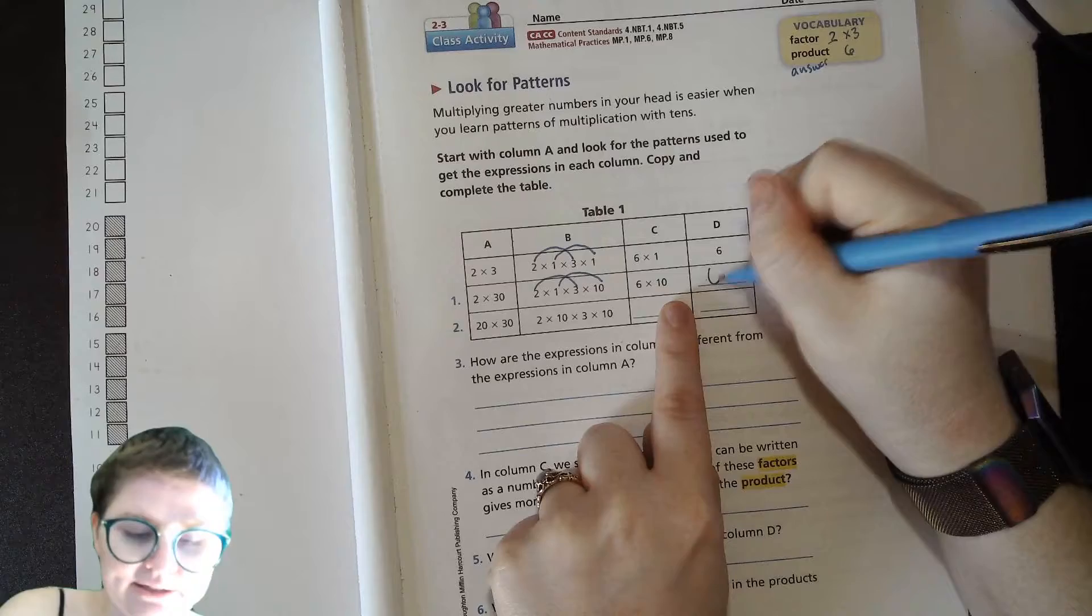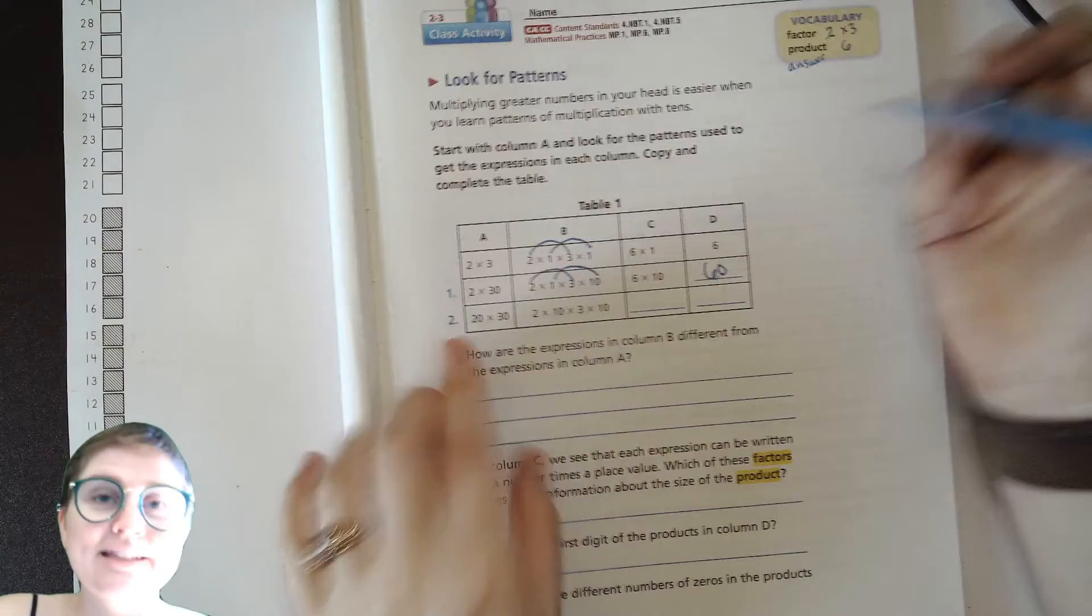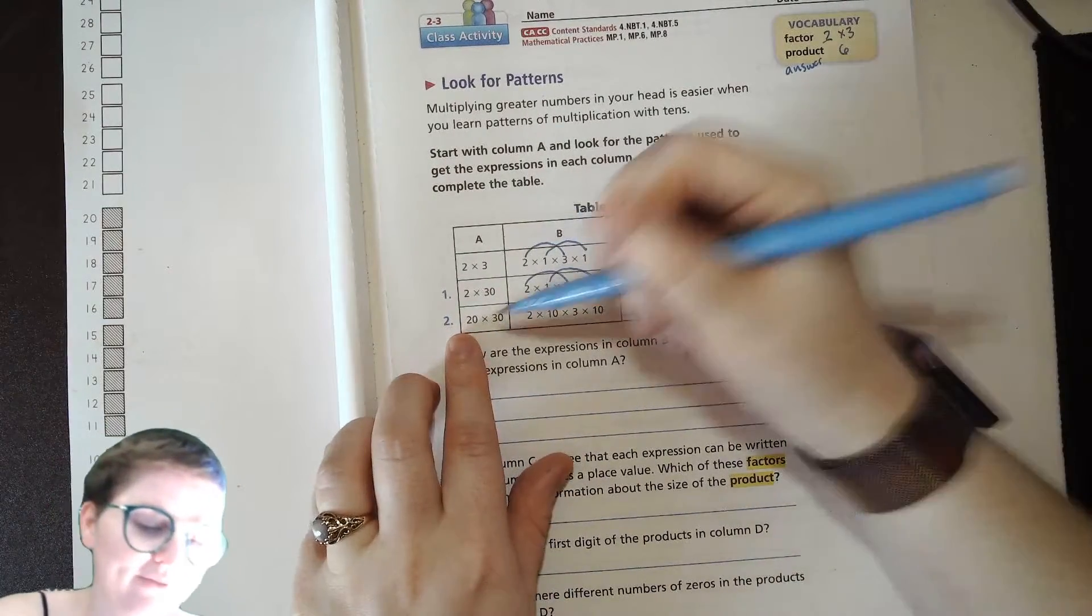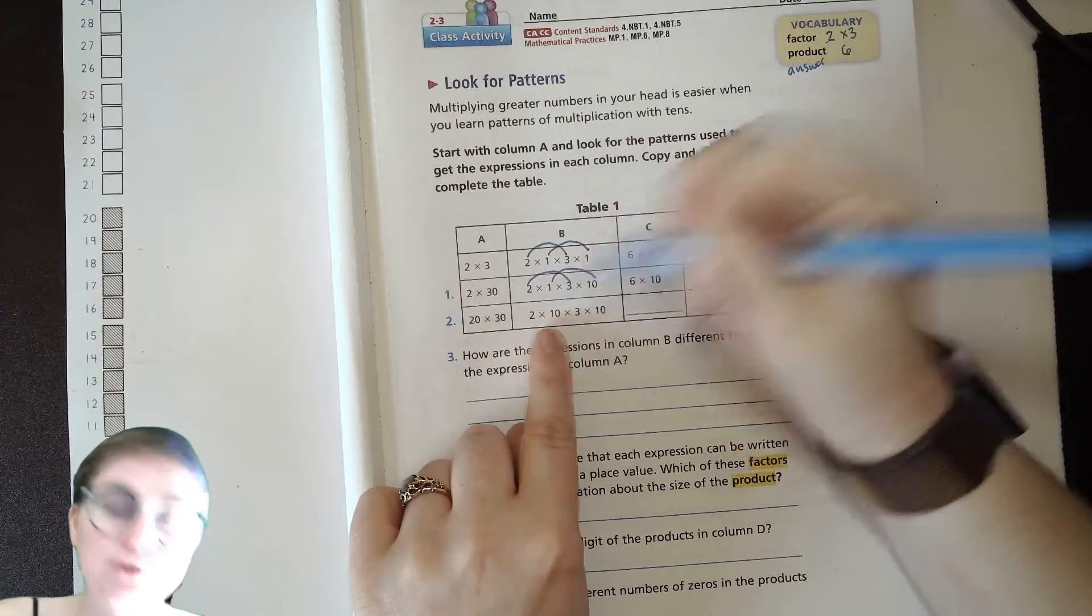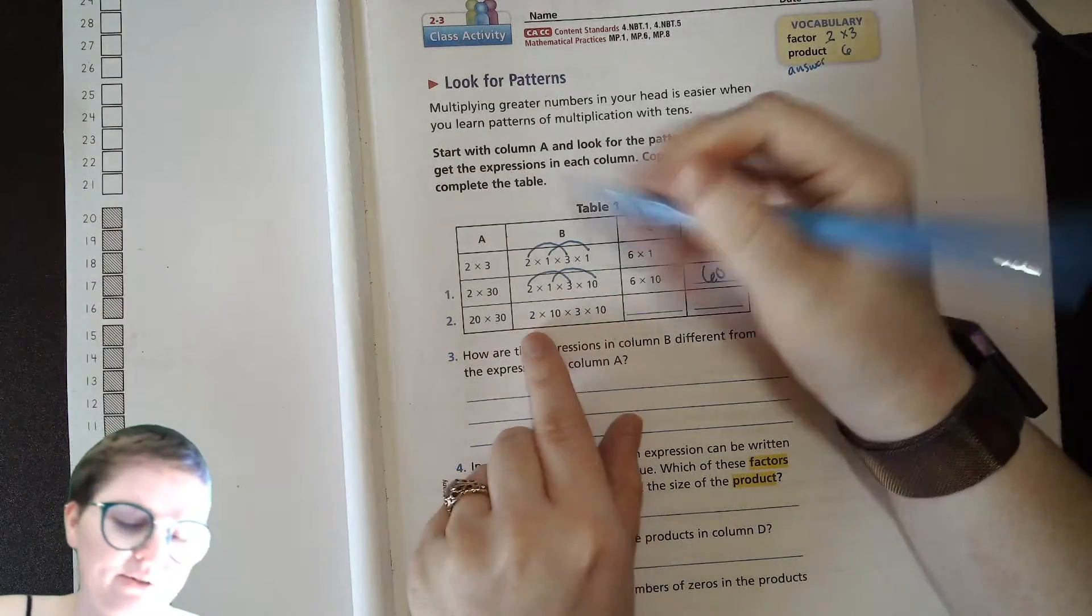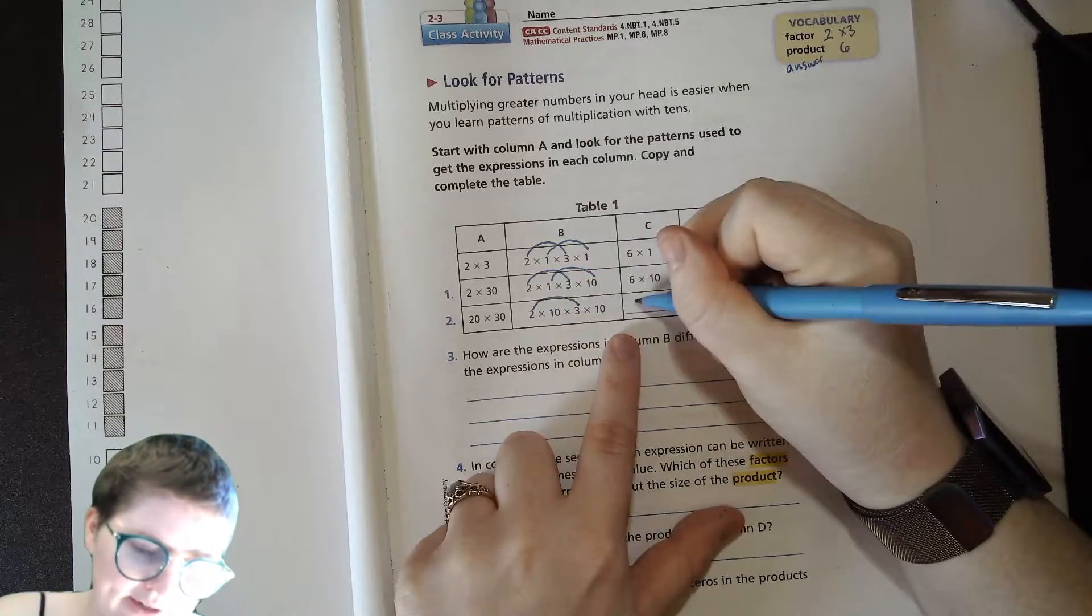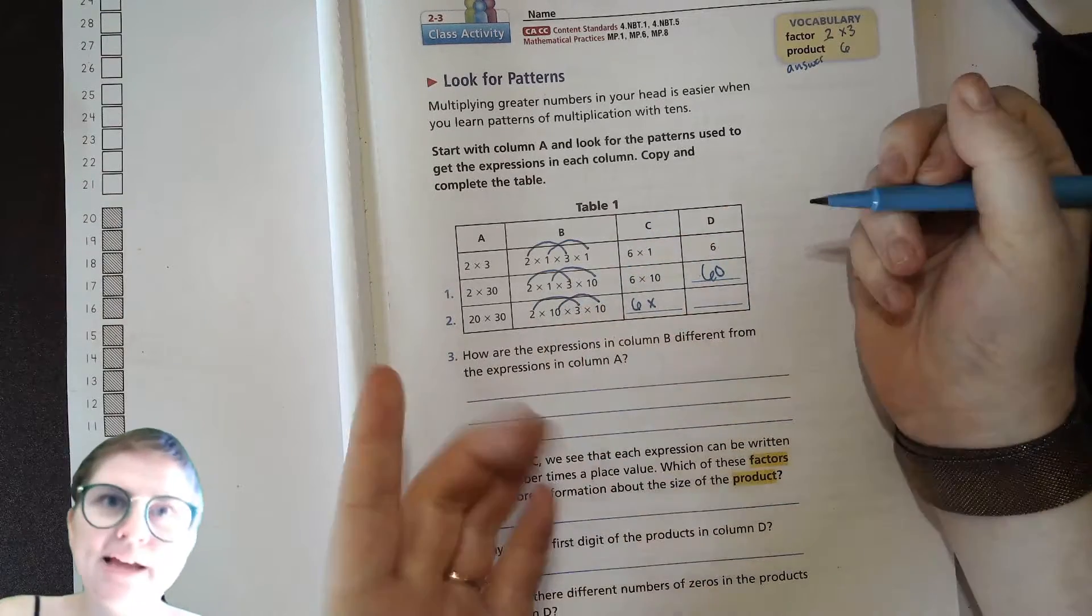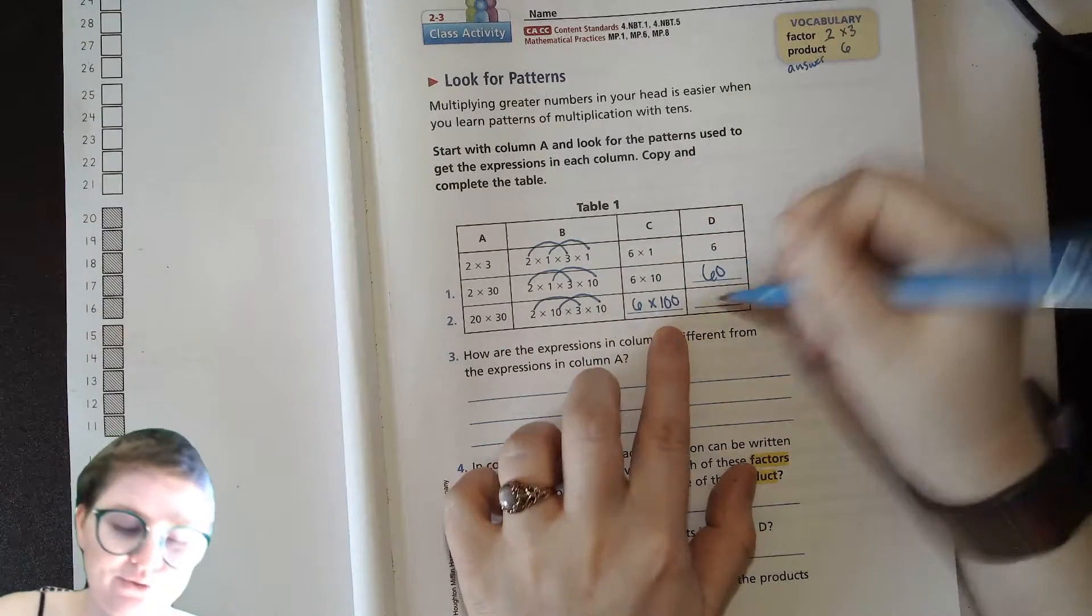Then sometimes both of the factors can have something in the tens place, right? So you can have 20 times 30. So our 20 is really 2 times 10 and our 30 is really 3 times 10. So then what do you think we're going to do? We're going to take our 2 and our 3 and get 6, and our 10 times 10, and we know 10 tens is what, right, 100. So 6 times 100 is 600.